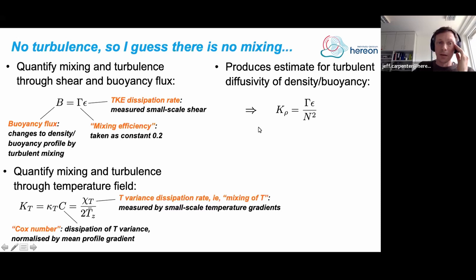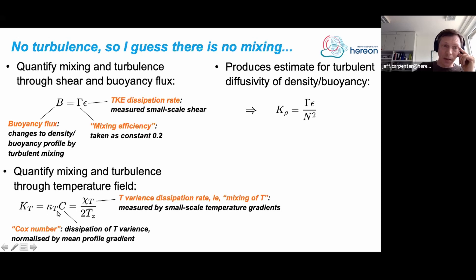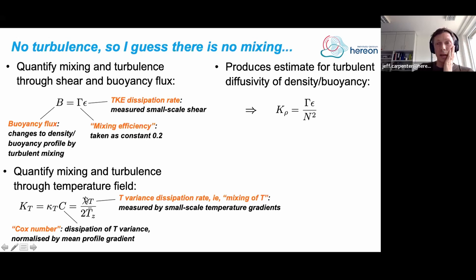We can also quantify mixing through the temperature field. We have micro-temperature sensors mounted on the glider right beside the shear sensors, measuring very small variations of temperature. We can relate that to a turbulent diffusivity of temperature κ_T, which is related to the molecular diffusion coefficient κ_t and something called the Cox number. The Cox number is expressed in terms of the dissipation rate of temperature variance χ_T — essentially the destruction of temperature variance by small-scale molecular mixing.